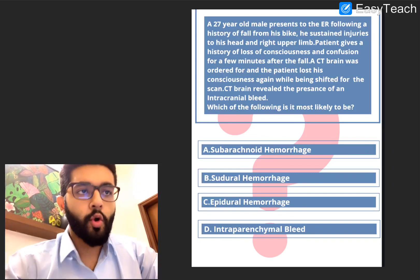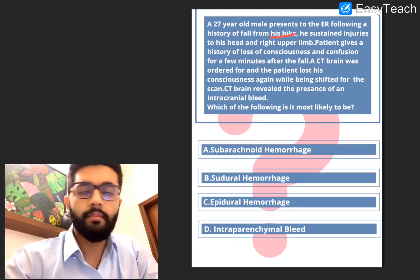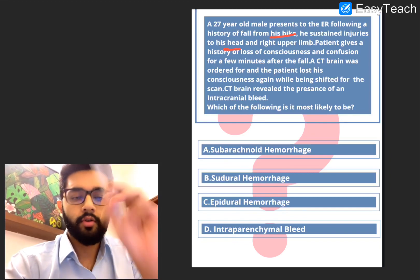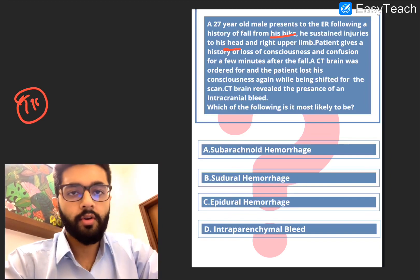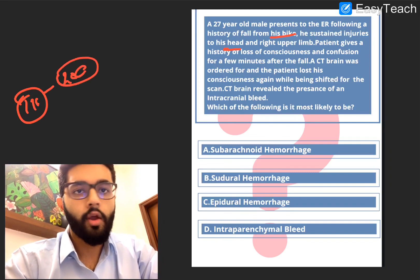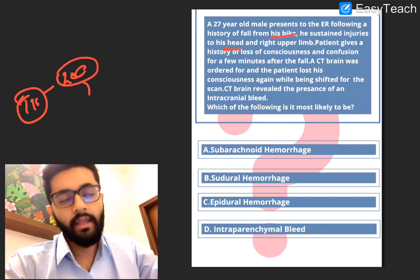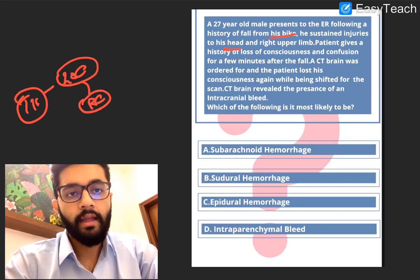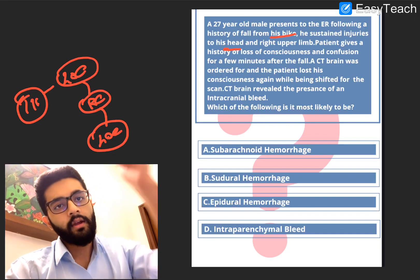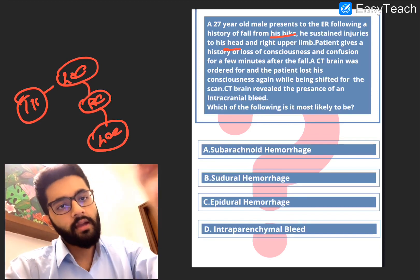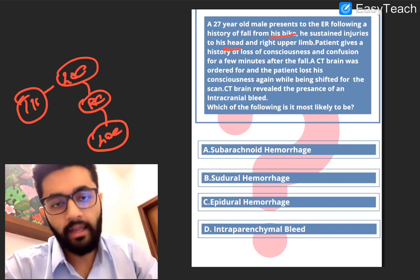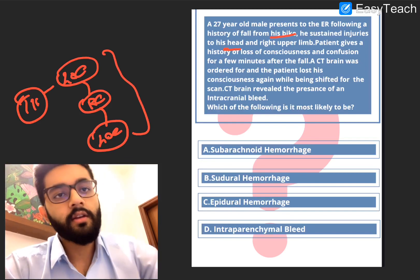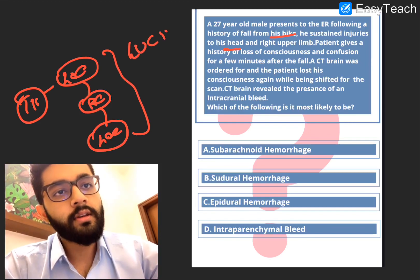What do we have to note from this history? Firstly, there is a history of RTA. Secondly, there is trauma to the head. The important pattern here is: trauma to the head, followed by a temporary period of loss of consciousness, then he regained consciousness completely, came to the hospital, and in the hospital again he had a loss of consciousness. This is classical of something called a lucid interval.